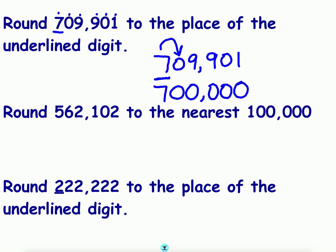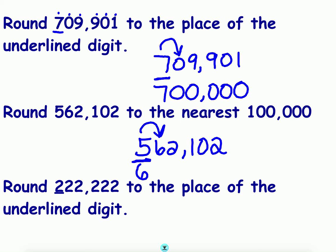Round 562,102 to the nearest hundred thousand. Find your place, look next door. Five or more? Yes — raise that score. The five becomes a six by adding one. Look to the right, there are zeros in sight — one, two, three, four, five zeros.